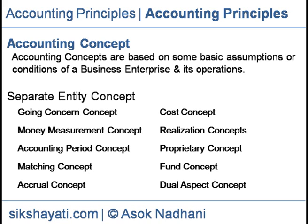Realization Concept: Under this concept, revenue is recorded only when it is realized, except hire purchase and some long-term contracts. Example: An asset is recorded at its historical cost of Rupees 3,00,000 and its cost at current market price is Rupees 7,00,000. In this case, such change is considered if it is materialized, that is, the asset is going to be sold at Rupees 7,00,000 certainly.